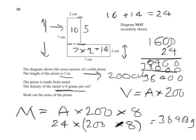The mass of the prism comes to 38,400 grams. It's not asked for in kilograms, but if it had been, it would be 38.4 kilograms. And that's the answer to this question.